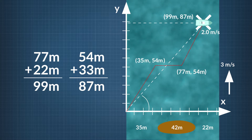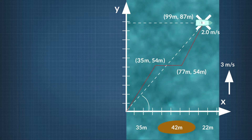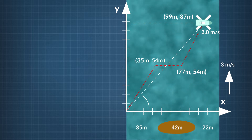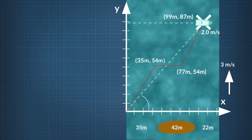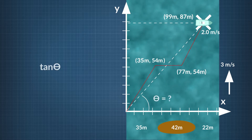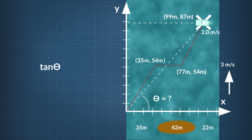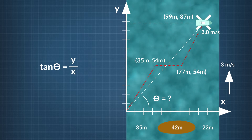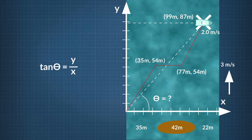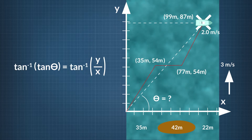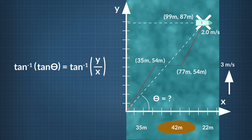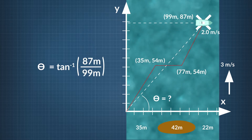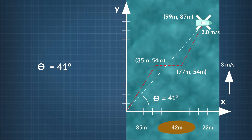To figure out the overall angle the boat moved in, shown here by the dashed line, we can use the fact that the boat started its journey at the origin and ended at the coordinate x equals 99 meters and y equals 87 meters. When solving for the angle, we use the tangent of theta, the angle made by the dashed line, equals the boat's ending y value divided by its ending x value, the opposite side of the triangle divided by the adjacent side. Taking the inverse tangent of both sides, we find that theta equals the inverse tangent of y over x. Plugging in 87 meters for y and 99 meters for x, we find that theta equals 41 degrees with respect to the positive x axis.